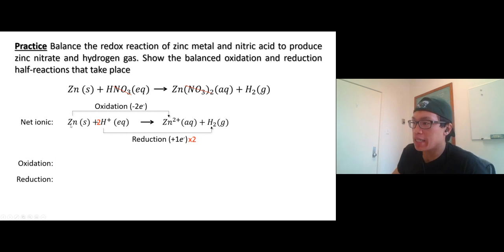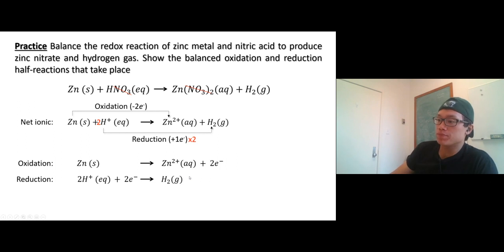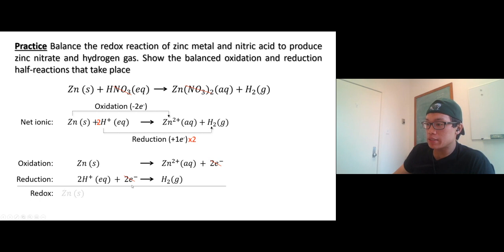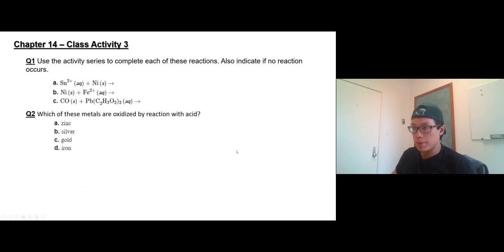Oxidation half: zinc becomes zinc ion and two electrons come out. Reduction half: two protons each take one electron — two protons take two electrons total and become hydrogen gas. Redox reaction: two electrons cancel out, so we have zinc plus two protons giving zinc two plus and one hydrogen gas. Practice makes perfect — class activity number three, and the key is right here.